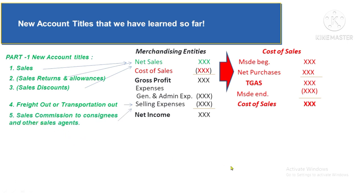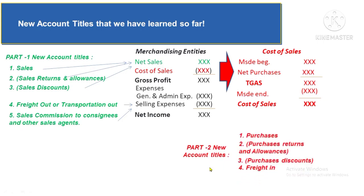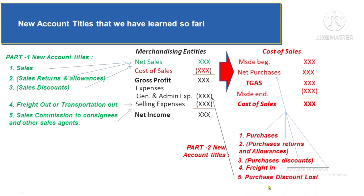In Part 2 of the merchandising series, we have four account titles that are part of net purchases. Net purchases equals Purchases plus Freight In minus Purchase Returns and Allowances minus Purchase Discounts. I also introduced Purchase Discount Lost, which is not part of net purchases but is part of operating expenses.